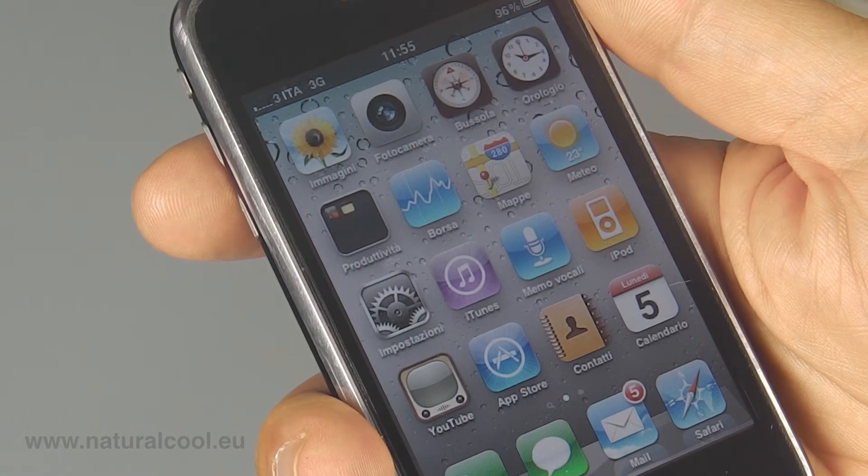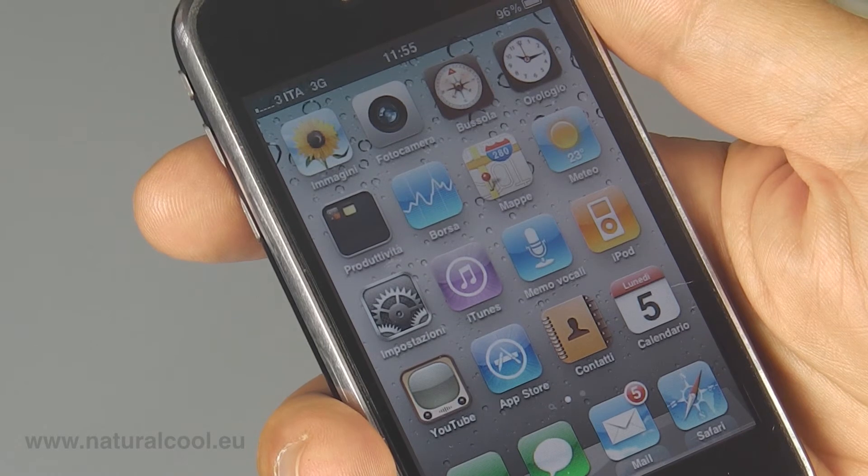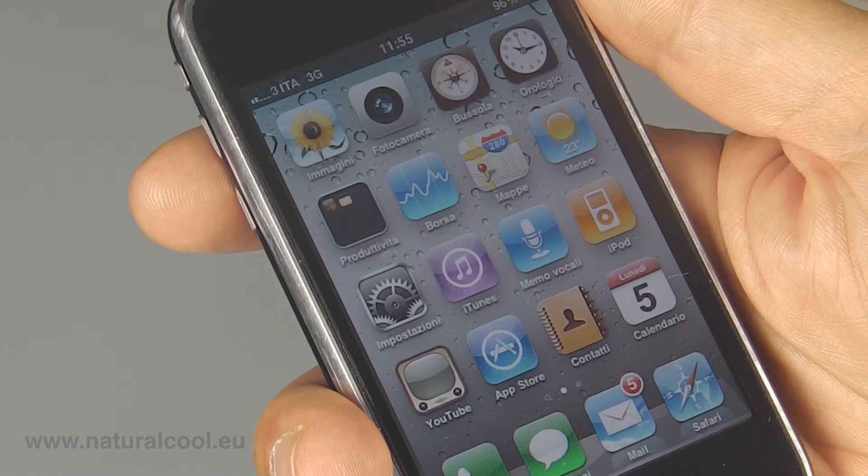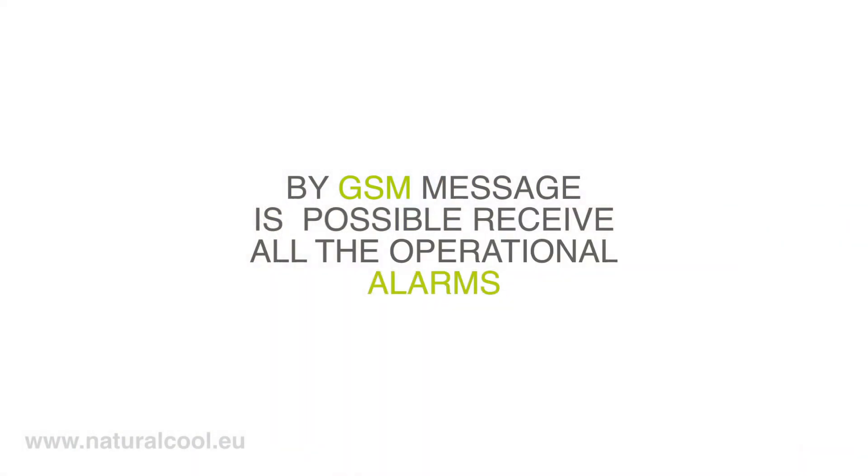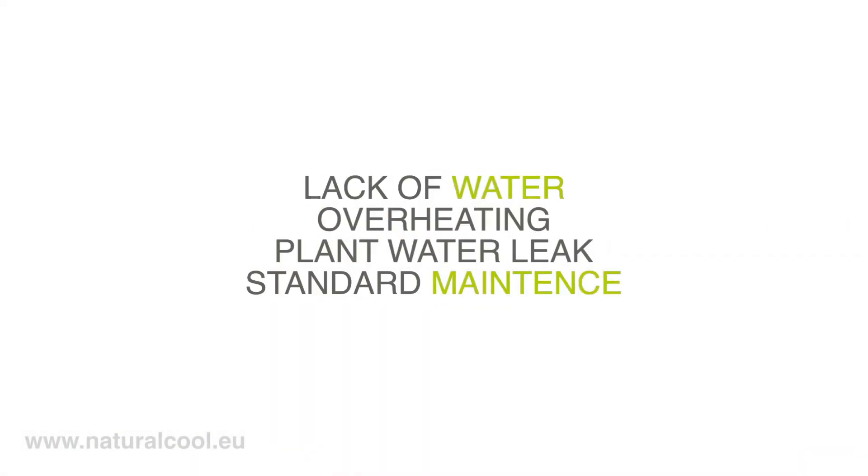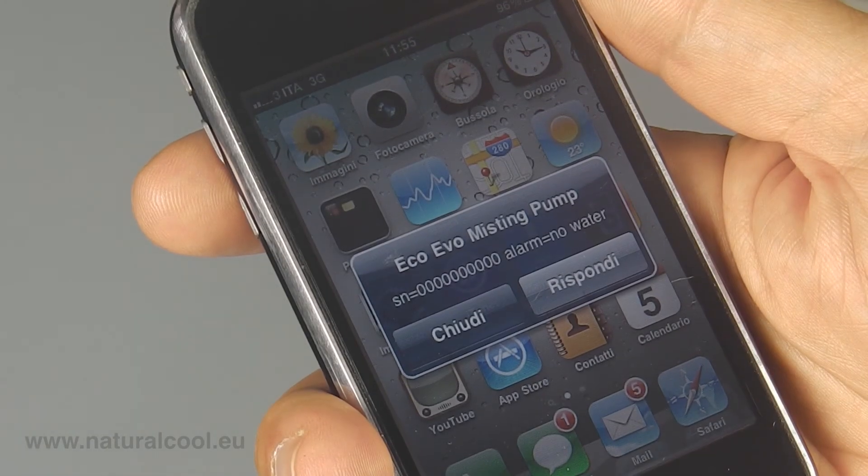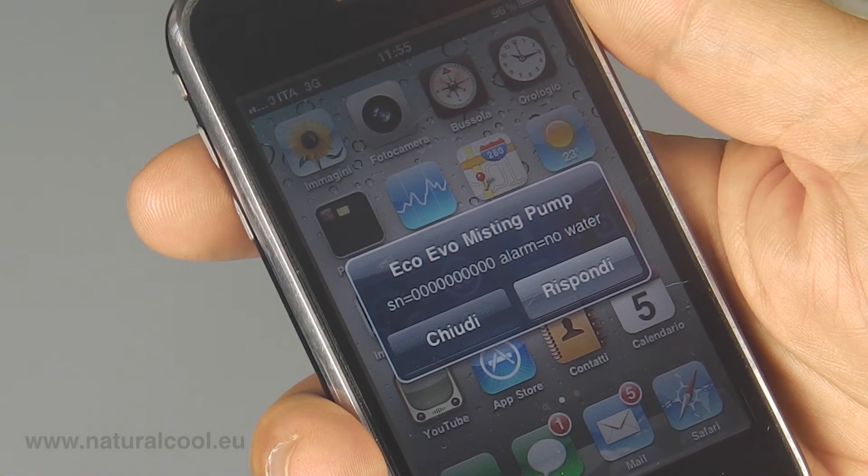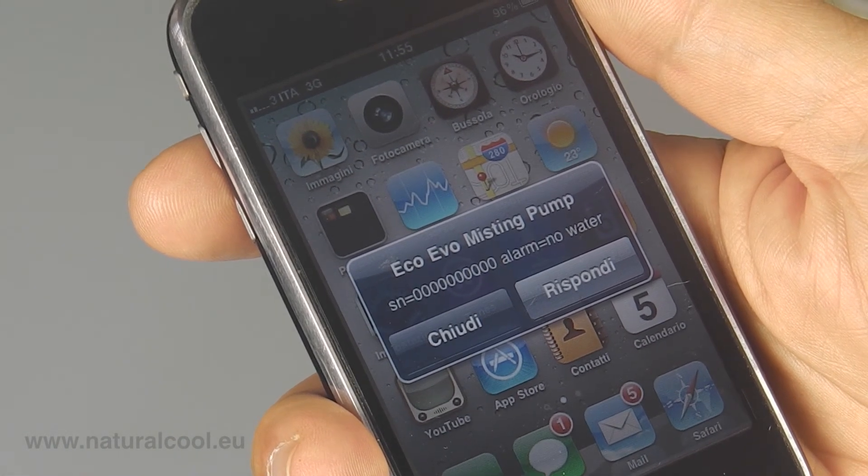Through a simple GSM message addressed to the SIM card inserted in the atomizing unit, it is possible to receive all the operational alarms, such as lack of water, overheating, plant water leak, and notification of the various programmed maintenance operations, in order to promptly know of a possible fault and quickly fix it.